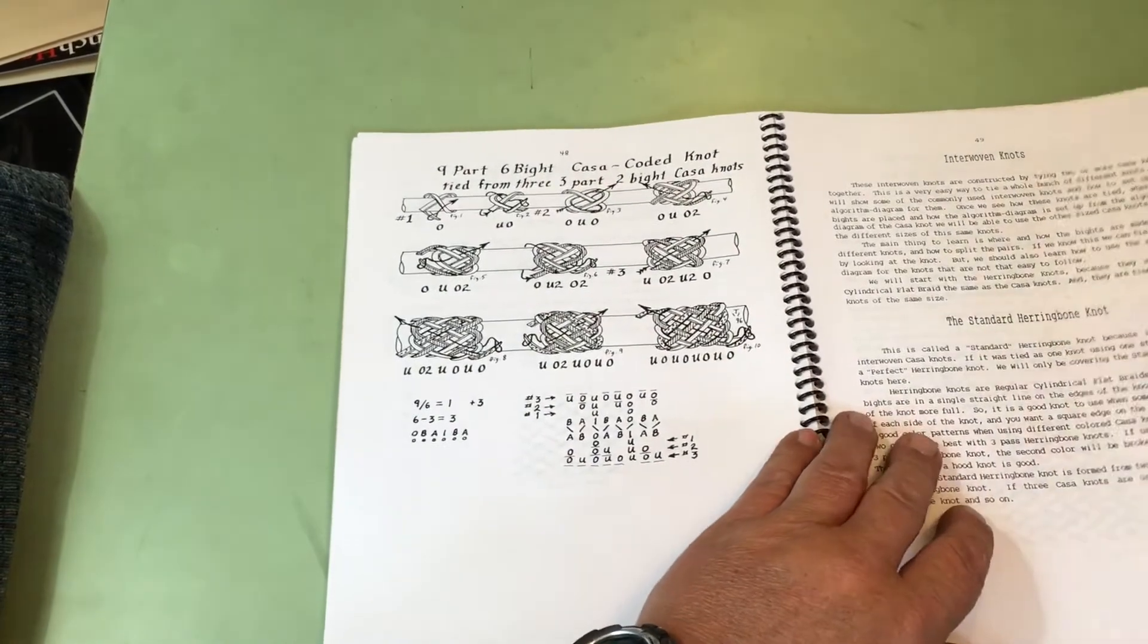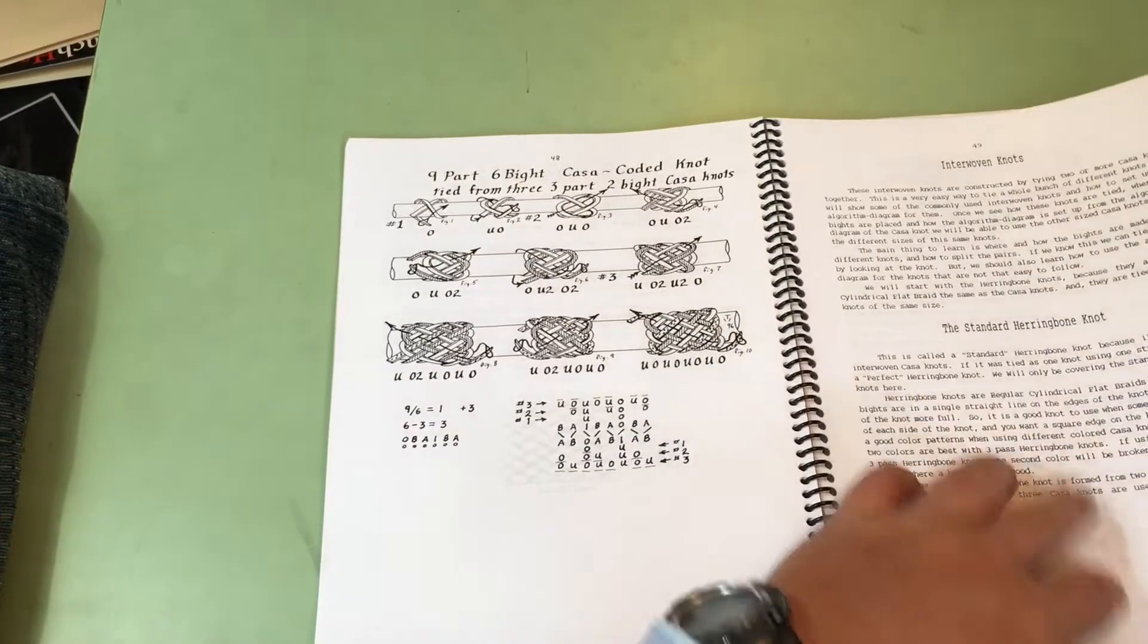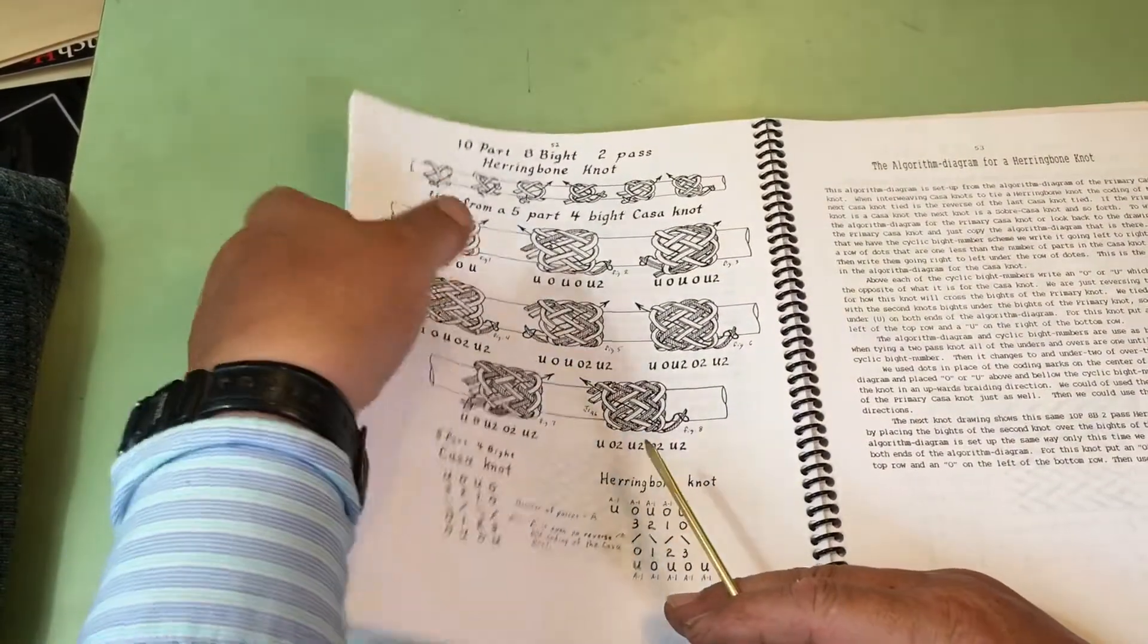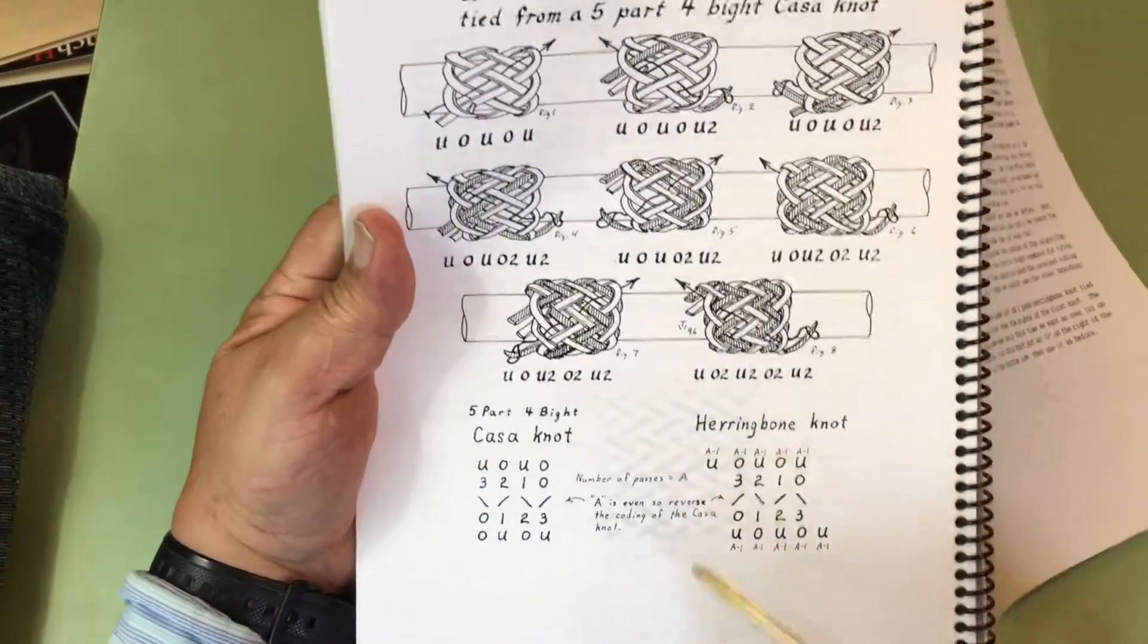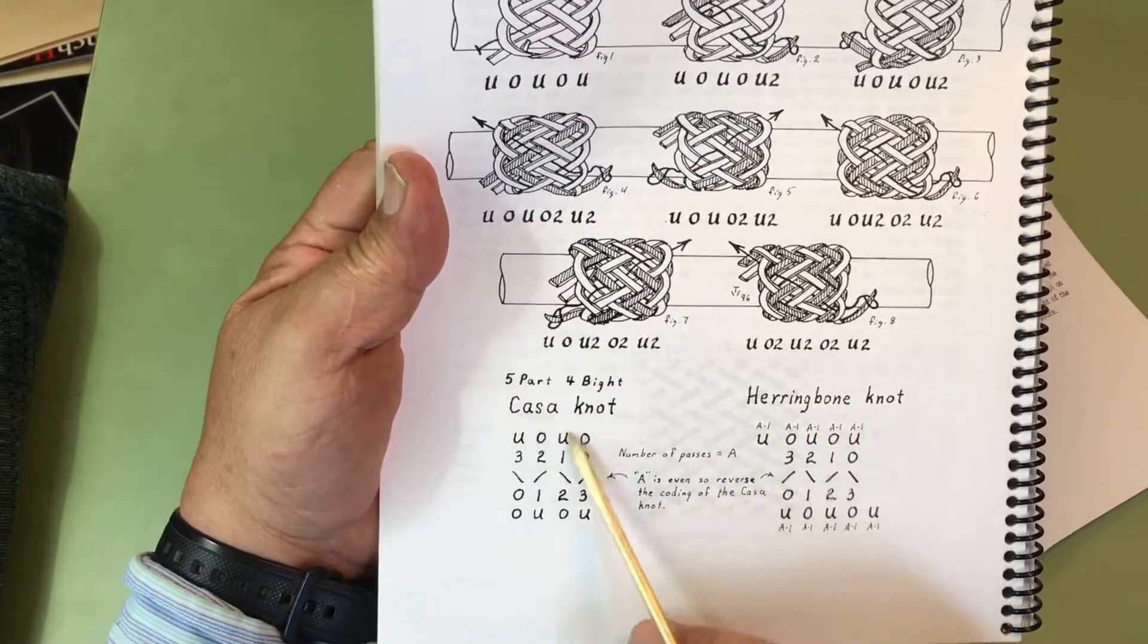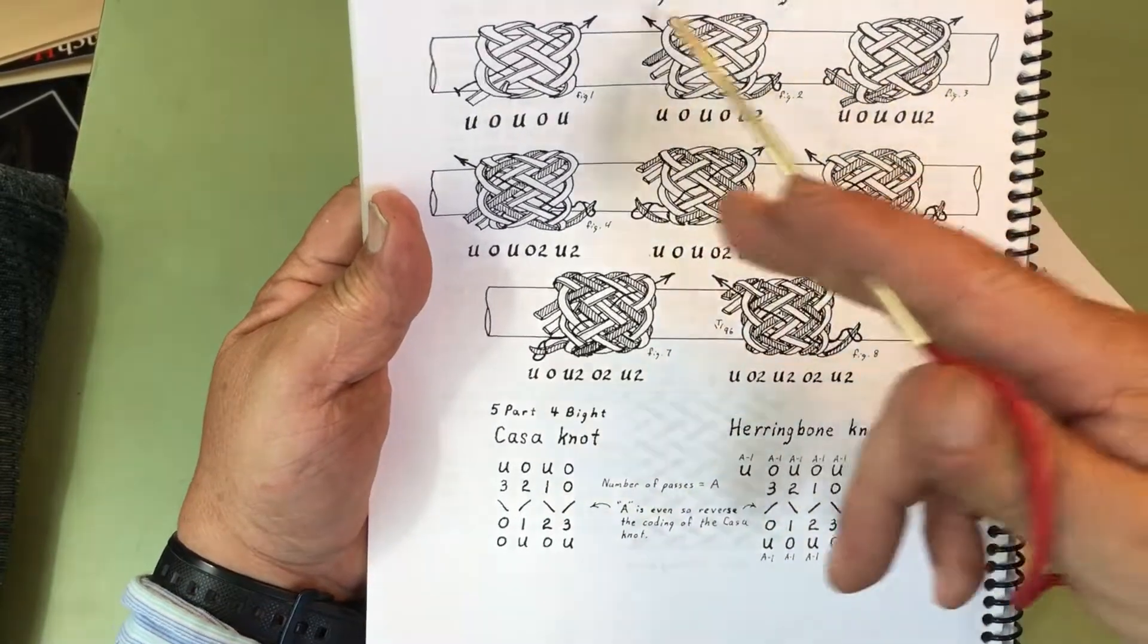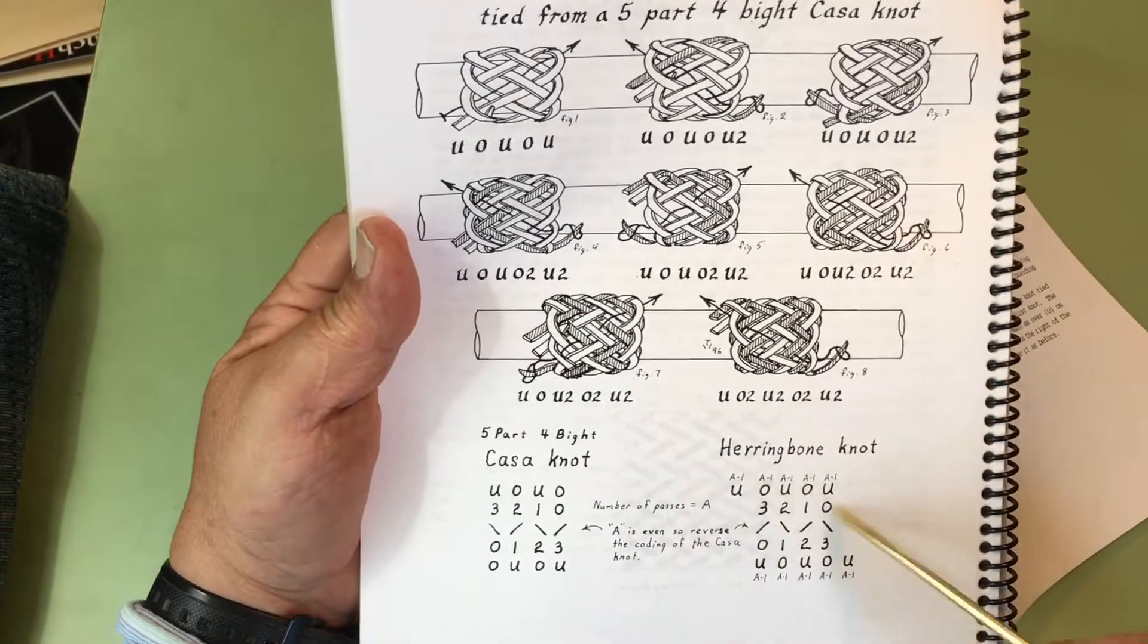Now, we're getting into the interweaves. And the first interweaves is the standard herringbone. This, here's the drawing. But underneath, here, you calculate out the algorithm diagram for the base knot. And then, since you're tying two five-part, four-bight knots together, you use it again.